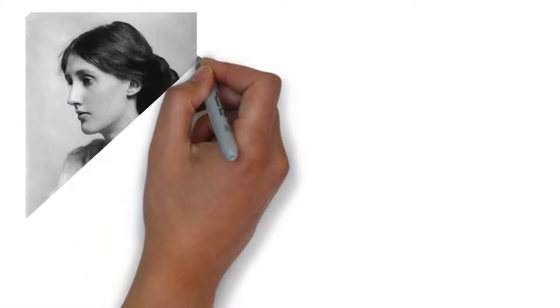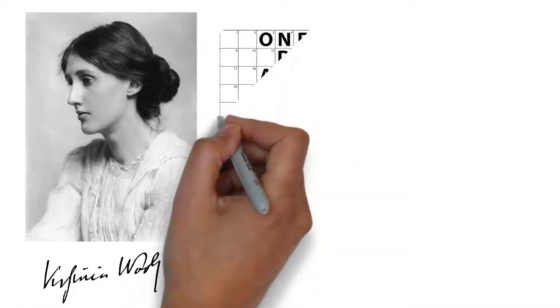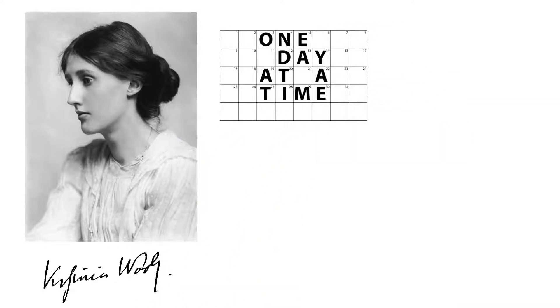Mrs. Dalloway by Virginia Woolf was published in 1925. It describes one day in the life of Clarissa Dalloway, an upper-class lady from London married to a member of Parliament.